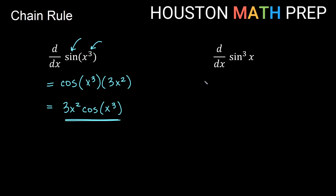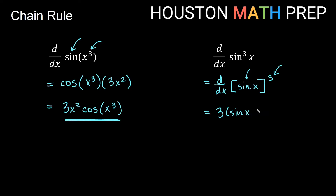Now let's look at the derivative of sine cubed of x. In trig, sine cubed x really means sine of x, all of that cubed — we write the power on the trig function even though sine isn't an object you can just cube. So this is saying all of sine x is cubed here. Our outer idea is the cube and our inner idea is sine x. By power rule, 3 comes out front, we leave the inside alone — sine of x — and the power goes down by 1 to squared. Then the derivative of the inside: derivative of sine x is cosine x. So we write this as 3 sine squared x times cosine x.